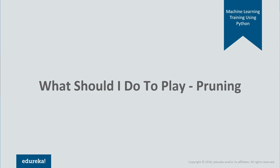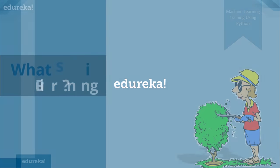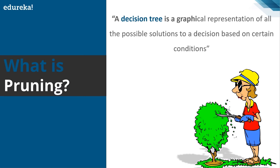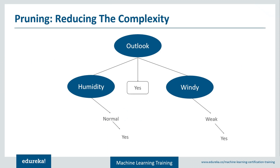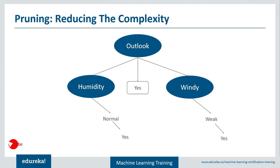Pruning is the process of cutting down nodes to get the optimal solution. It reduces the complexity of a decision tree by removing sub-nodes. In the pruning example shown, it filters to show only results where you can play.